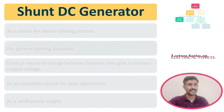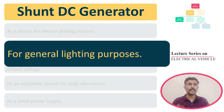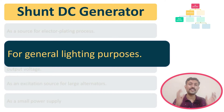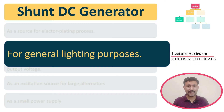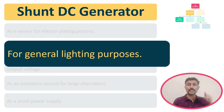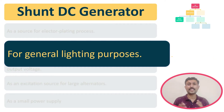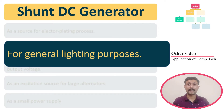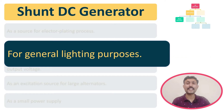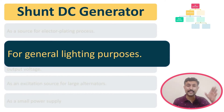The second application is that we can use this DC shunt generator for general lighting purposes. The basic requirement of general lighting is that load variation is very random — people turn switches on and off at any time. But even in that condition, the DC shunt generator can provide a certain amount of constant output voltage, which is why it is used for this application.